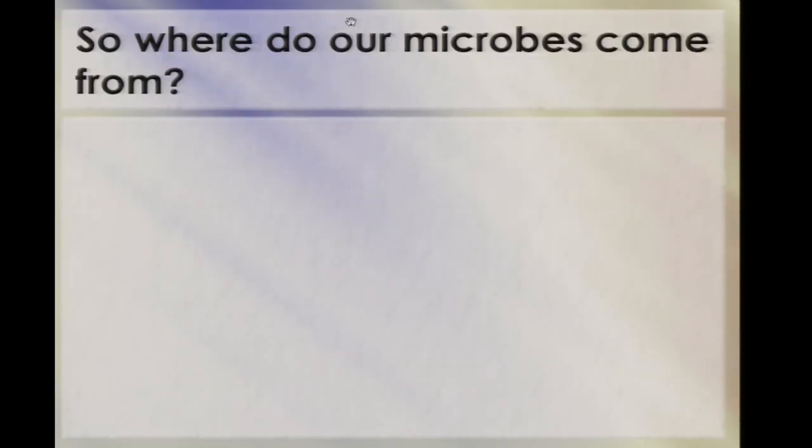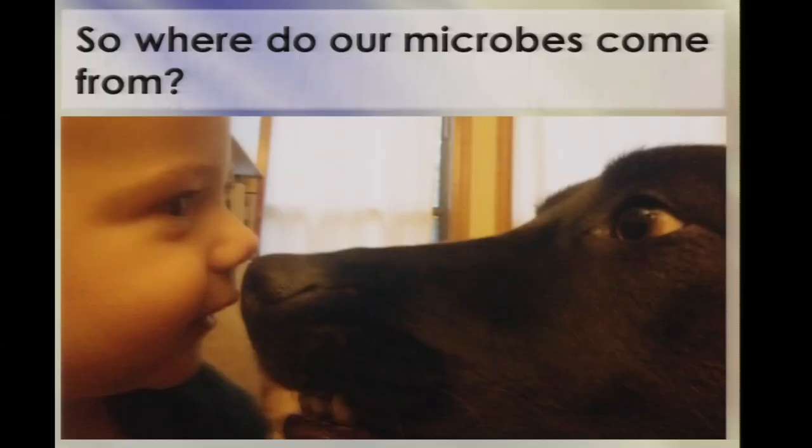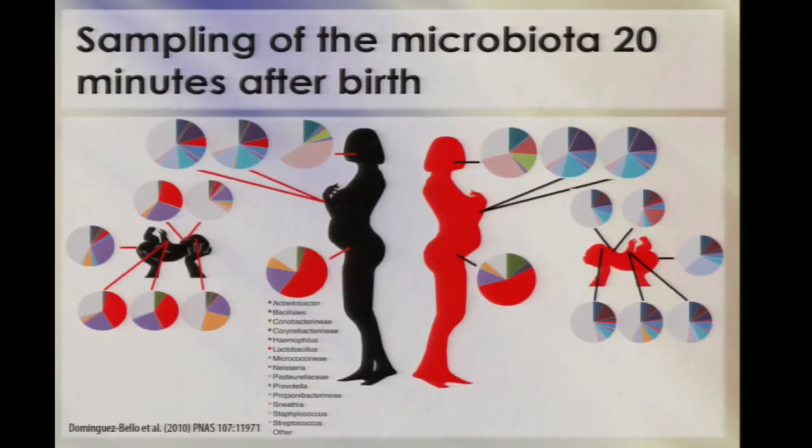This might lead you to wonder where our microbes come from in the first place. If you have dogs or kids, as I do, you probably have some dark suspicions about that — all of which turn out to be completely true. We can match up people to their pets pretty accurately according to the microbes they share. With Maria Gloria Dominguez, who's speaking as a keynote tomorrow, we showed that babies' first microbes depend very heavily on delivery mode.